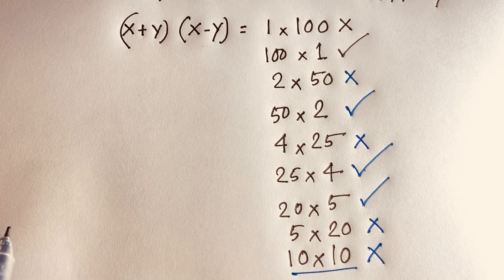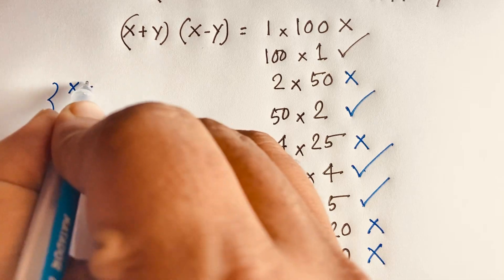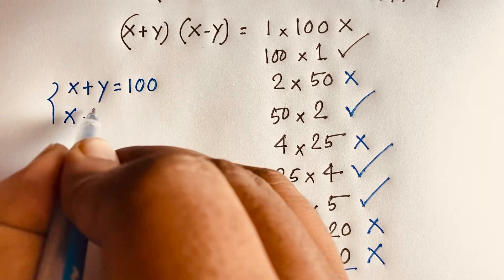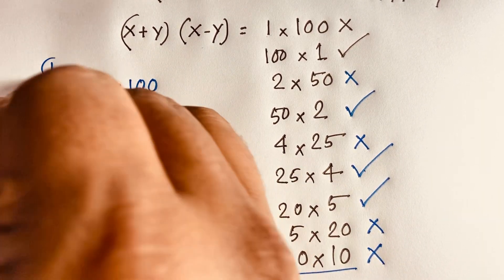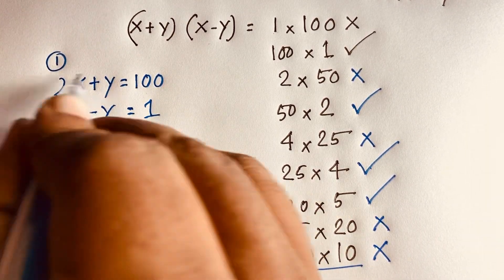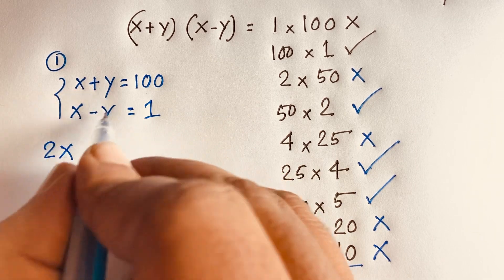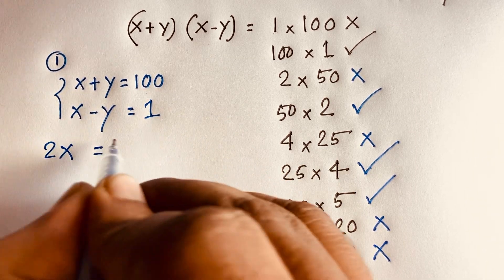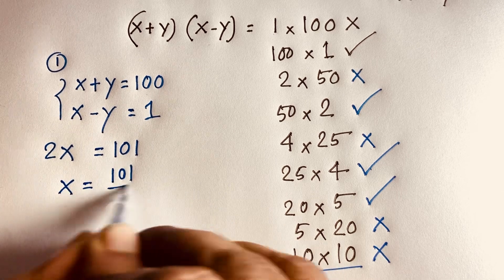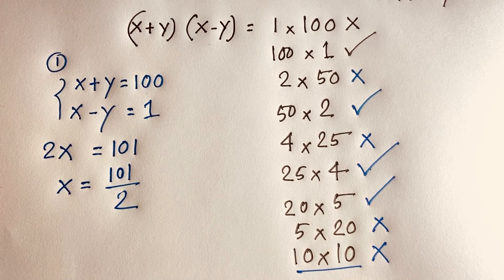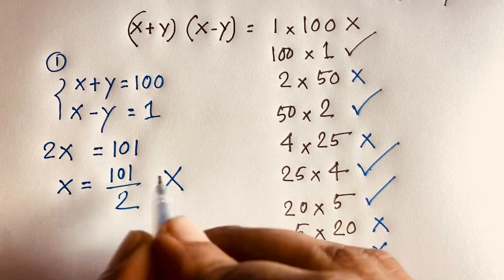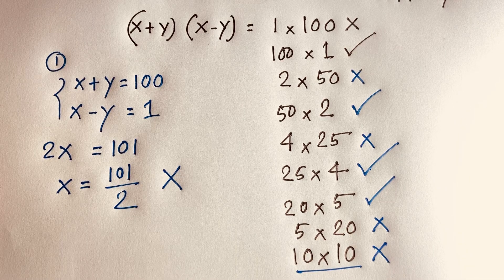First case: x plus y equals 100 and x minus y equals 1. If I add both equations, the y terms cancel and we get 2x equals 101, so x equals 101 over 2. This is not a natural number — it's a fraction. So y would also be a fraction. This case is not possible since we need natural numbers.